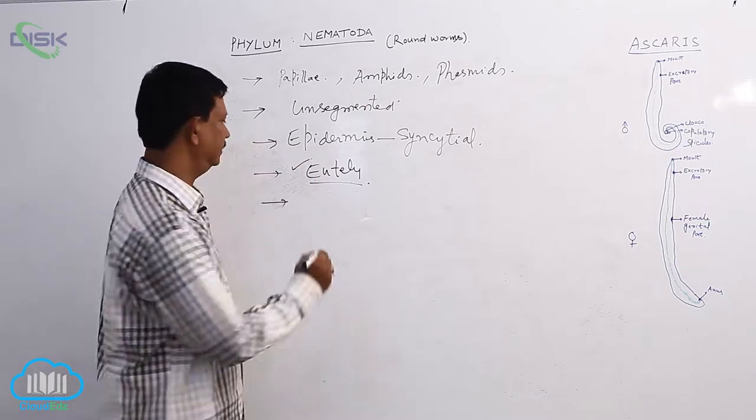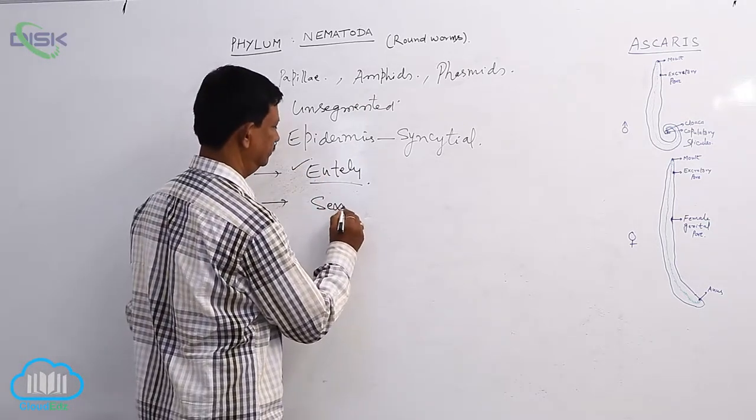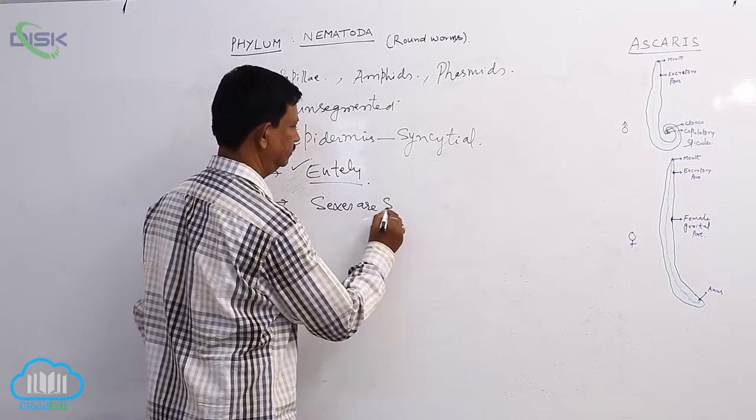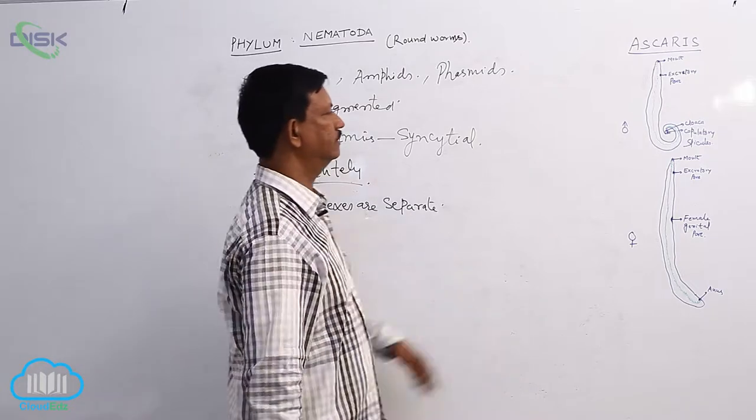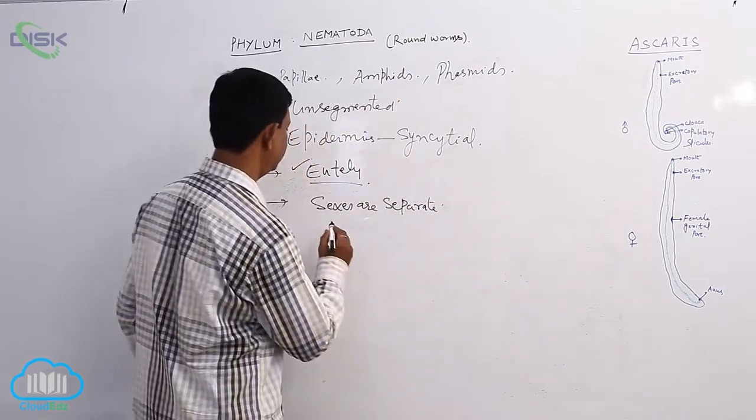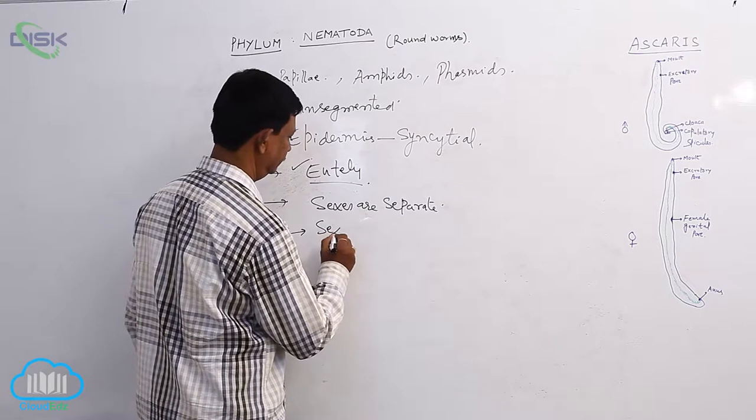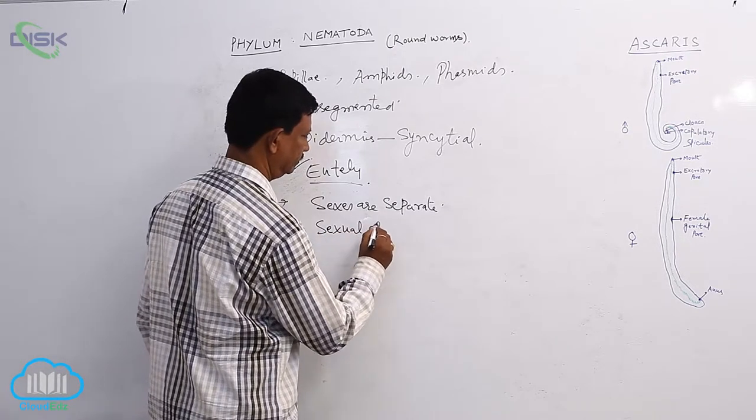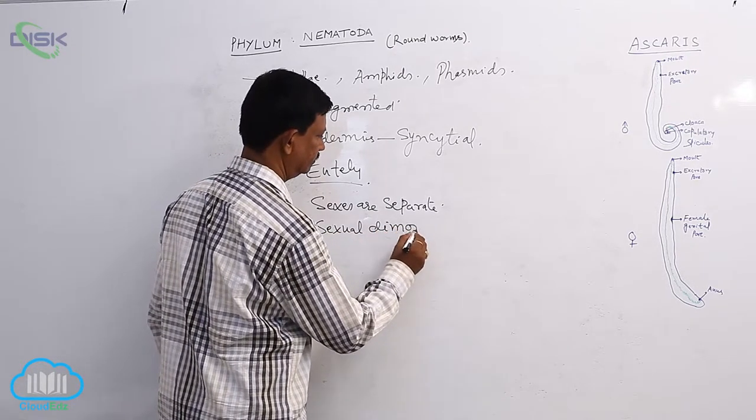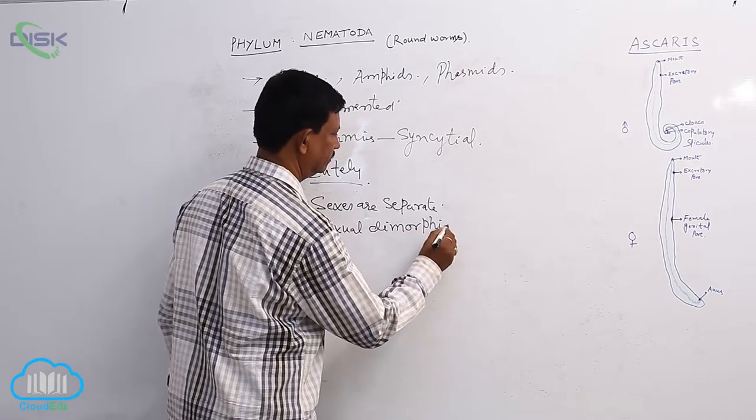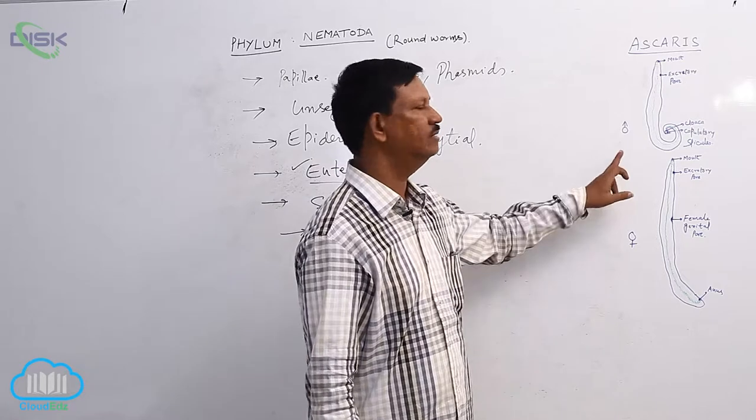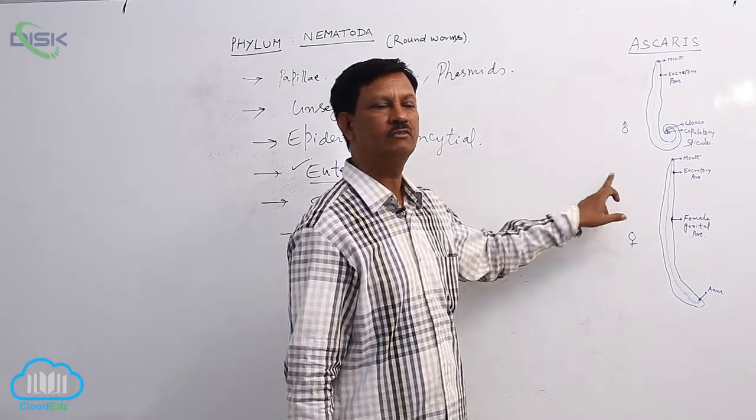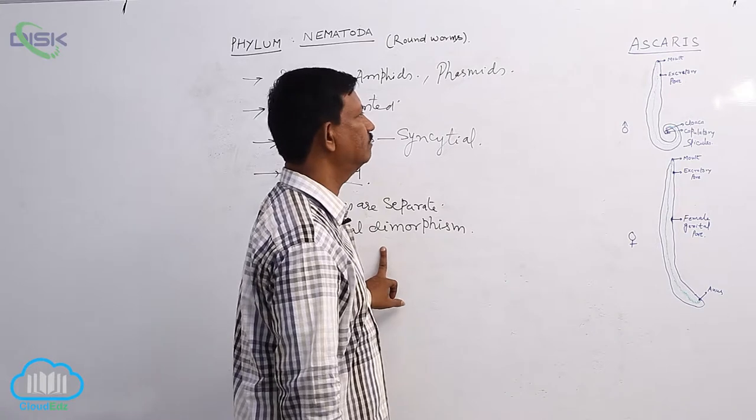Sexes are separate. Male and female animals are separate and sexual dimorphism is well marked. Externally we can recognize which is the male animal, which is the female animal. Then you can call it that the sexual dimorphism is present - it is well marked.